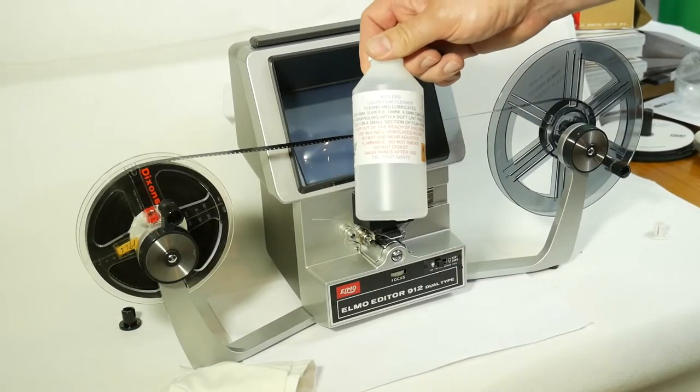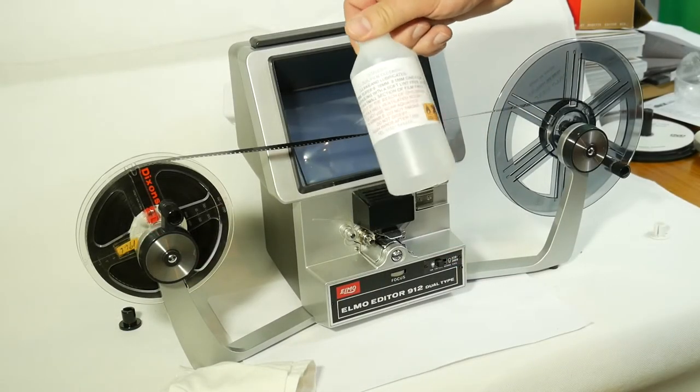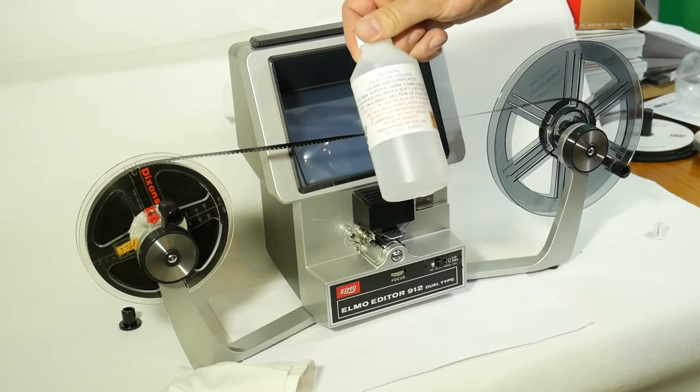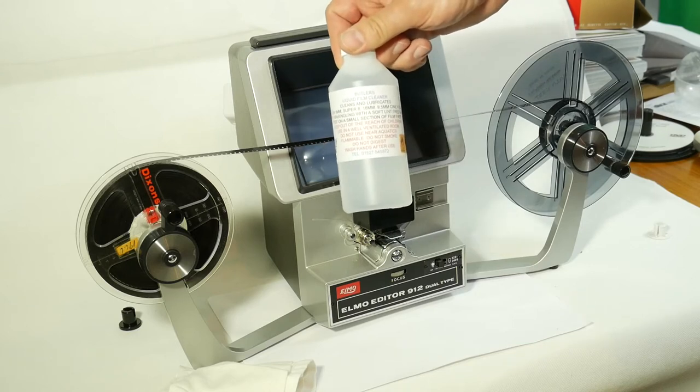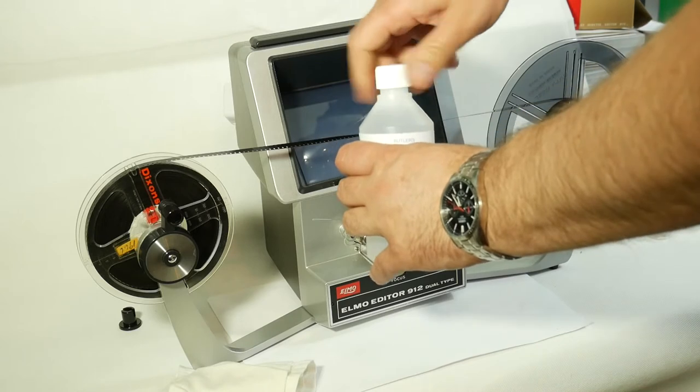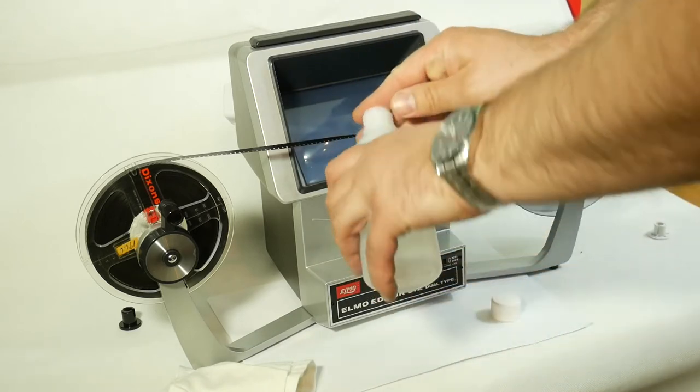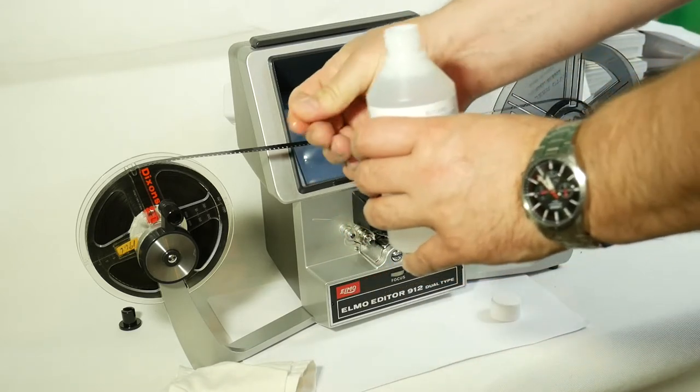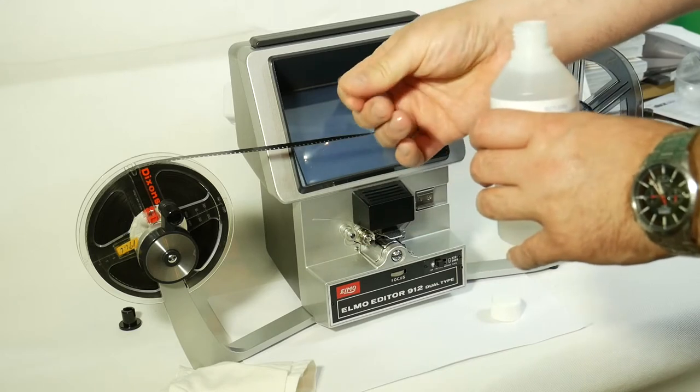Okay, this is Butler's Liquid Cinefilm Cleaner. It comes in 250ml bottles. It does contain a lubricant as well, so if you put a little bit on your fingers you can feel the lubricant which is in there.